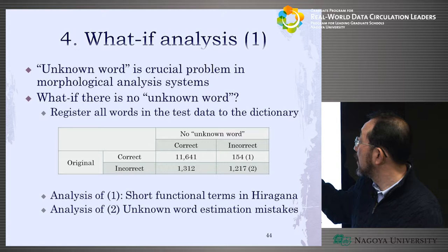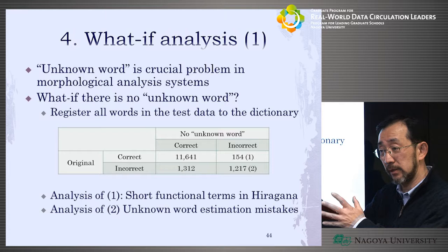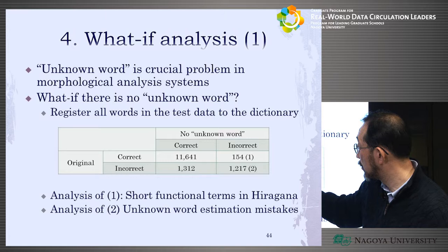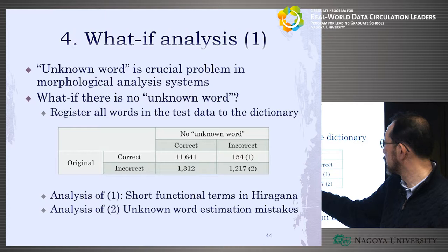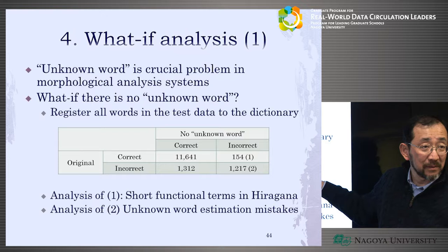The new system improved accuracy — roughly 10% improvement in the number of corrected tokens. But the problem is: some originally correct results changed to incorrect. By adding new words, some mistakes were introduced. Why does this happen? Also, some incorrect results remained incorrect even after adding the unknown words.